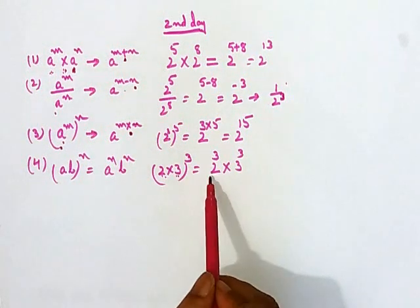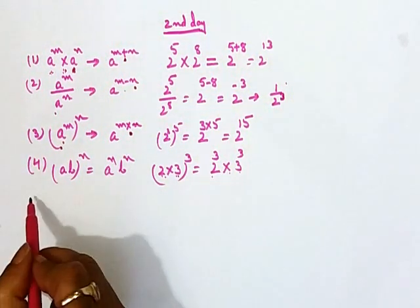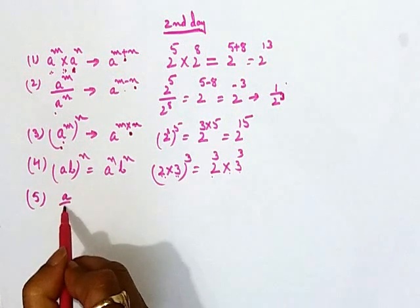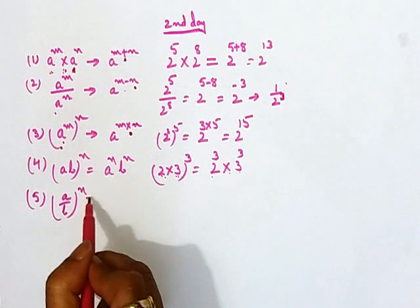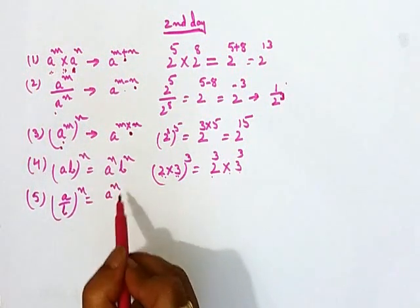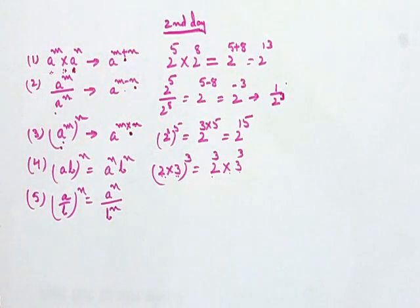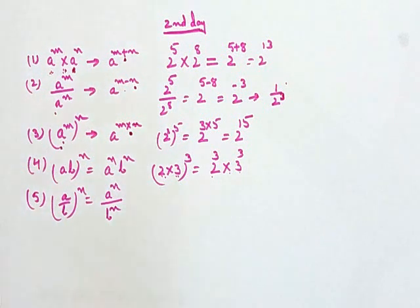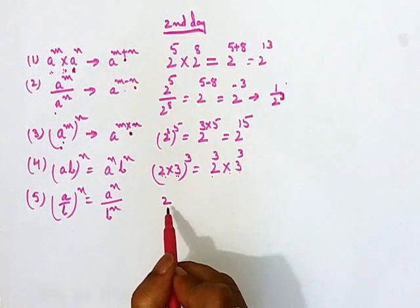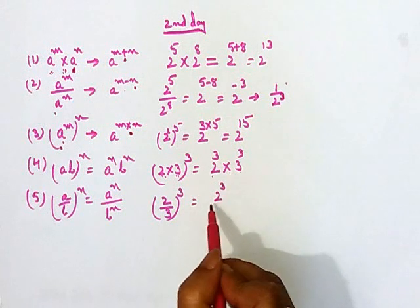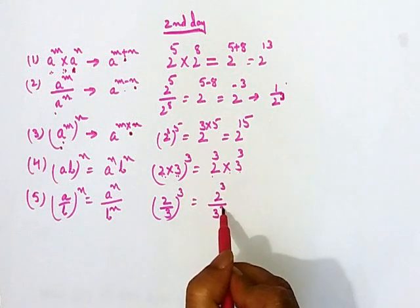Every base will have to be treated individually. The fifth rule: a upon b to the power n — again we treat every base independently — gives a to the power n divided by b to the power n. For example, 2 by 3 to the power cube equals 2 to the power cube divided by 3 to the power cube.